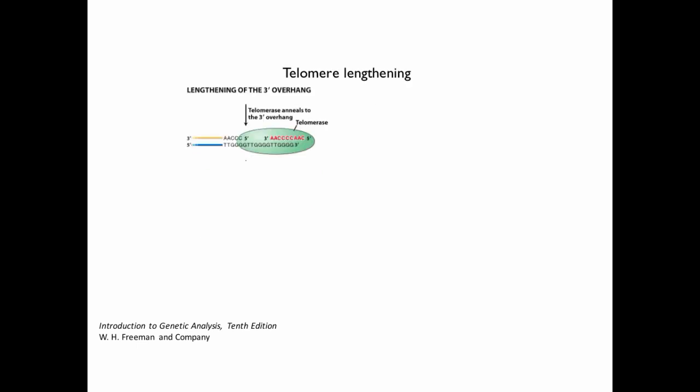So to better illustrate that, let's walk through, where here again, we've got the 3' overhang on the bottom. And telomerase, shown here in green, and then the red sequence has the RNA primer shown in red that will bind staggeredly with the 3' overhang. And then it uses the RNA primer template to elongate the 3' overhang.